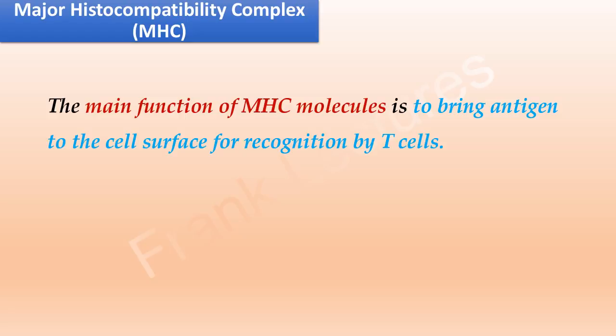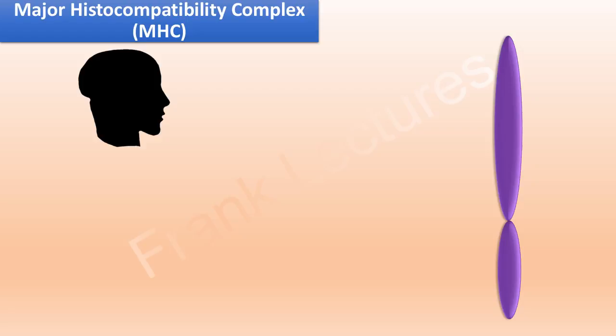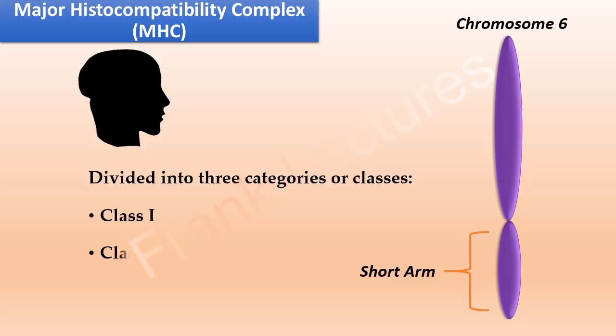In humans, the genes coding for MHC molecules are found on the short arm of chromosome 6. The MHC molecules are divided into three classes: class 1, class 2, and class 3.